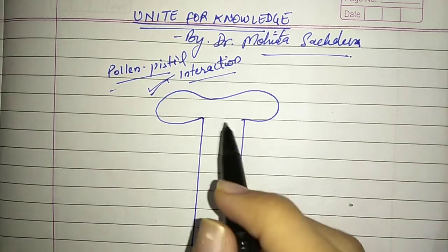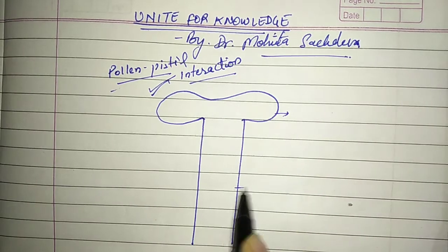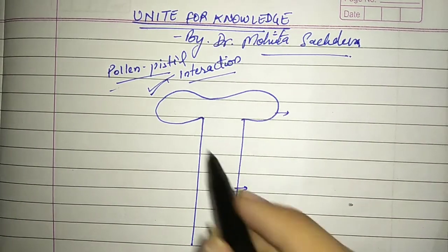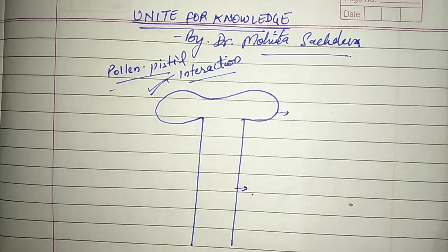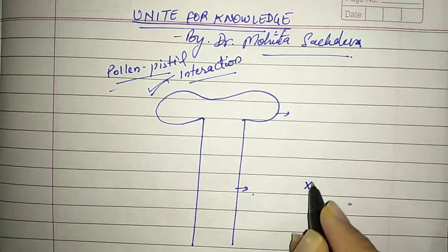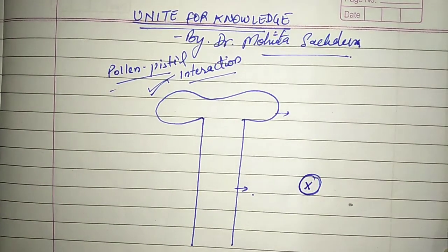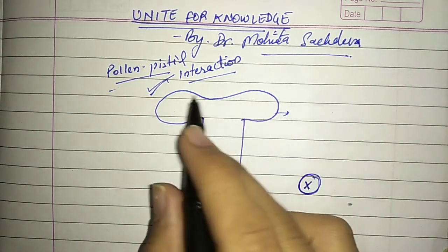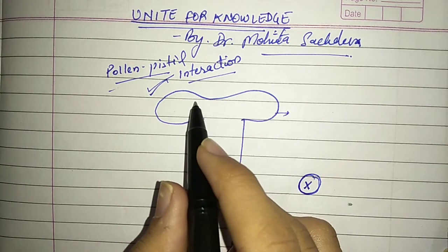Let's say this is the stigma and style of a plant, any plant, let's call it plant X. Any species could be this X plant. Now pollen grains will come and land on it. It's not specified which pollen grain will land here from air, water, or insects.